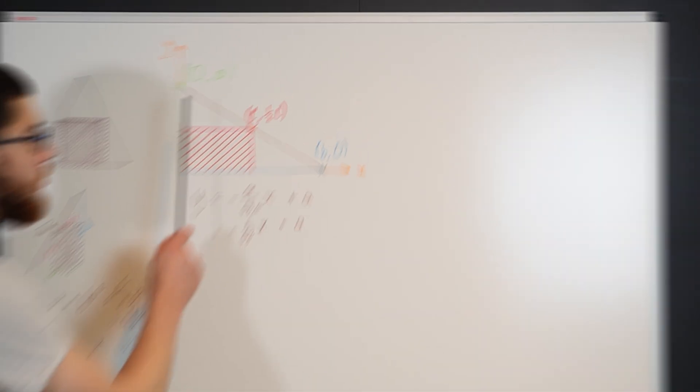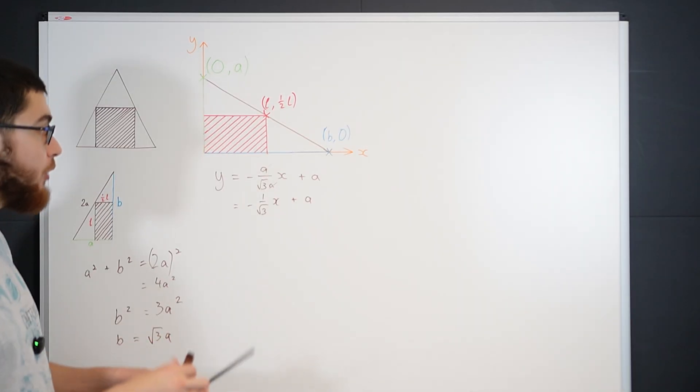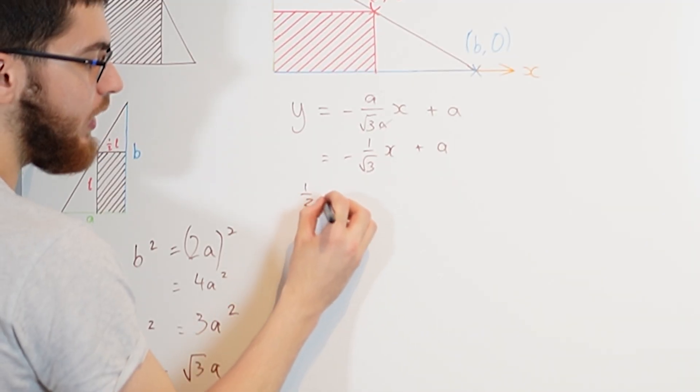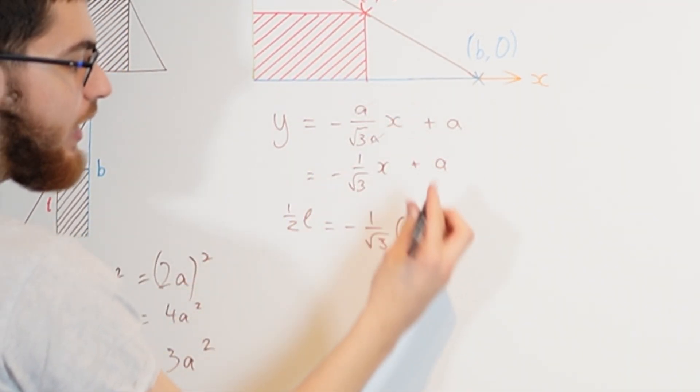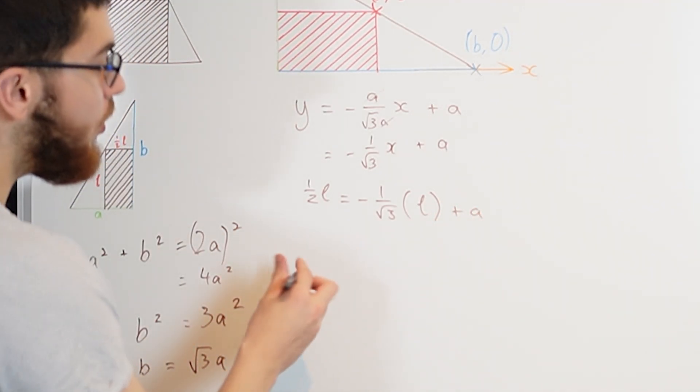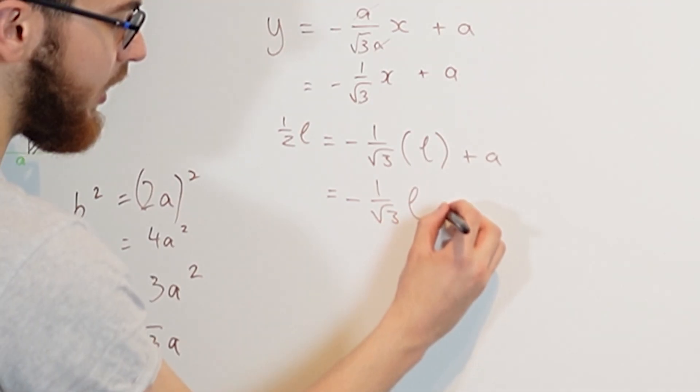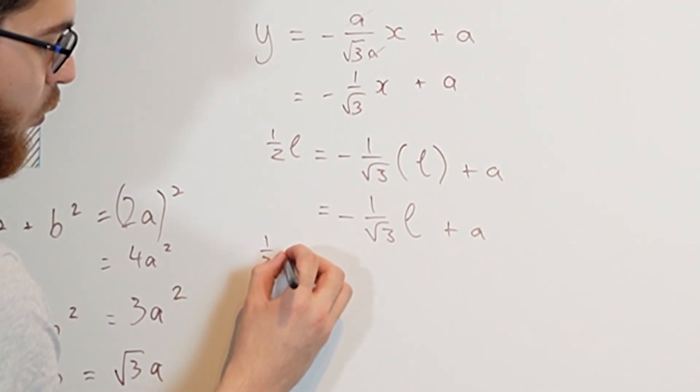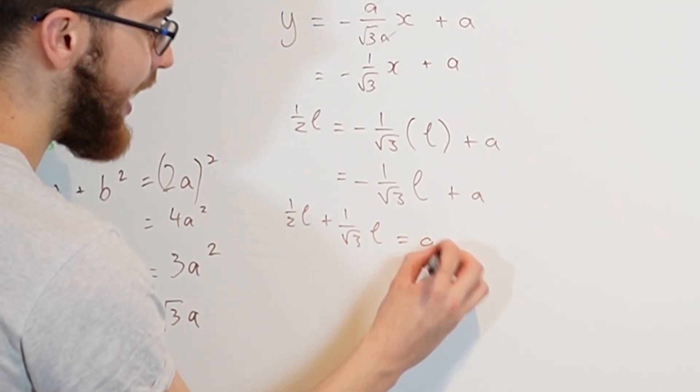Now notice that we've dealt with these two points, but we haven't dealt with the last point yet. So we've got to substitute in L and half L. So Y is a half L minus 1 over root 3 of X, which is L plus A. Now this rearranges to minus 1 over root 3L plus A. We get one half L plus 1 over root 3L equals A.